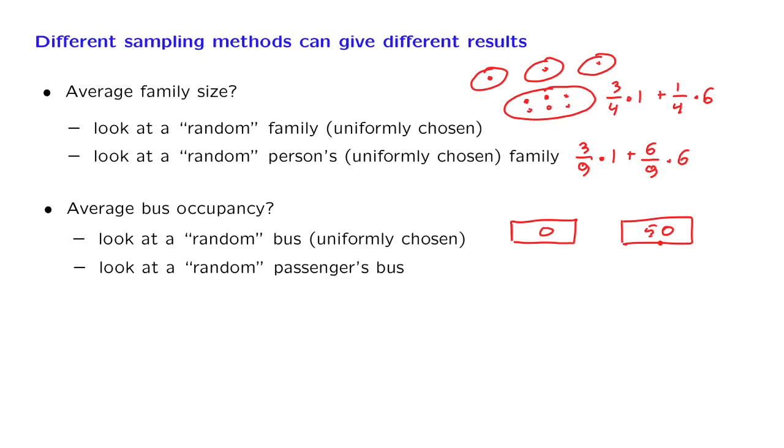A similar situation is if you're talking about average class sizes. One method is to look at all the classes, see how many students there are in each class, and take the average. Another method would be to ask a typical student how large is your class. Because more students are in large classes, when you pick a student at random, you are likely to get a higher answer as opposed to when you look at a random class.